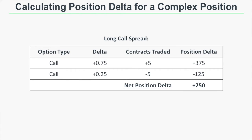Now that you know how to calculate position delta for a simple position, let's look at position delta for complex positions. All you have to do is sum up the position deltas for each option in the position. So let's look at a long call spread, which consists of buying a call option at a low strike and selling a call option at a higher strike. Let's say we buy five contracts of the 0.75 delta call — that gives us a position delta of plus 375. Now let's say we sell five calls with a delta of 0.25, giving us a position delta of negative 125.